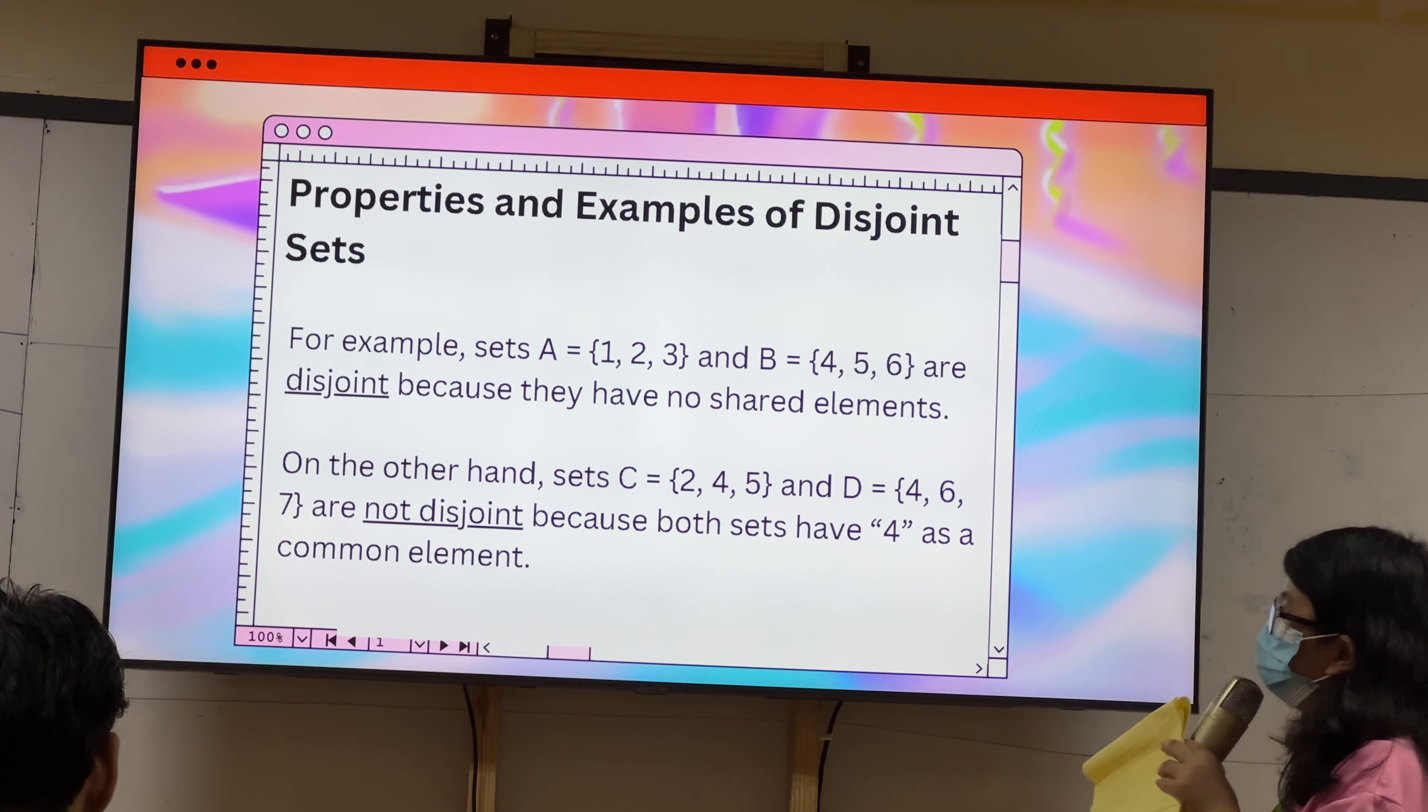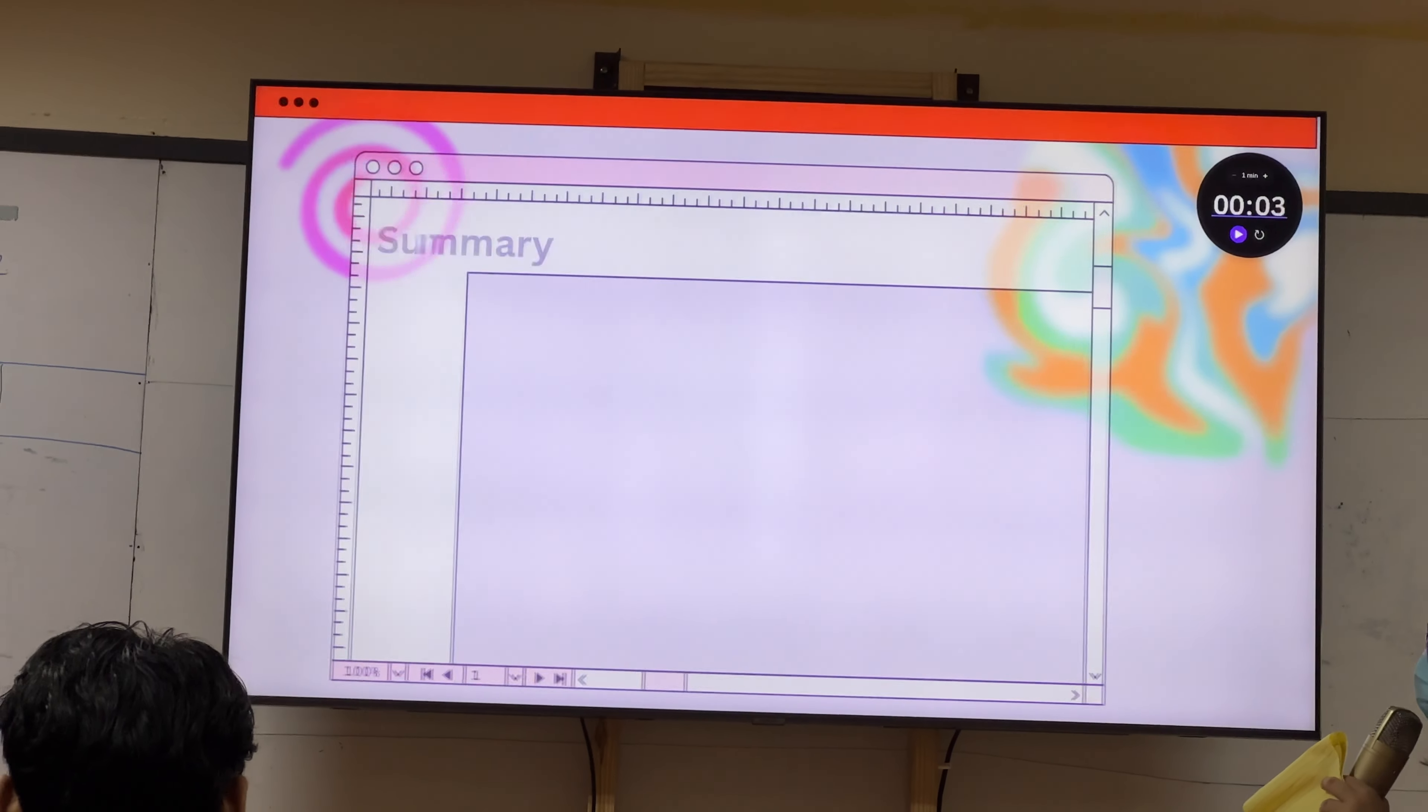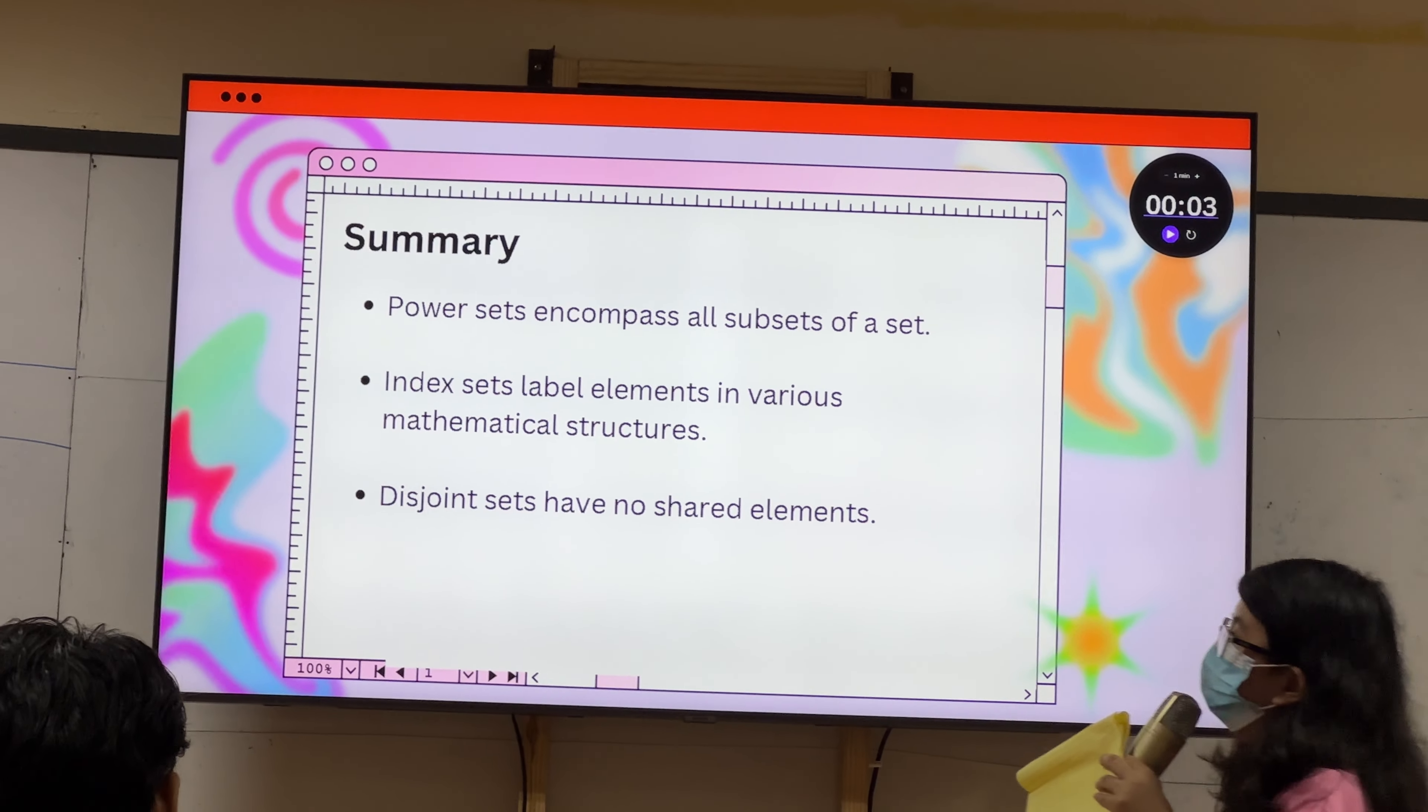Icompare ni siya, anay nga, set C: 2, 4, 5, and set D: 4, 6, 7. They are also not disjoint, because both sets have 4 as common elements.